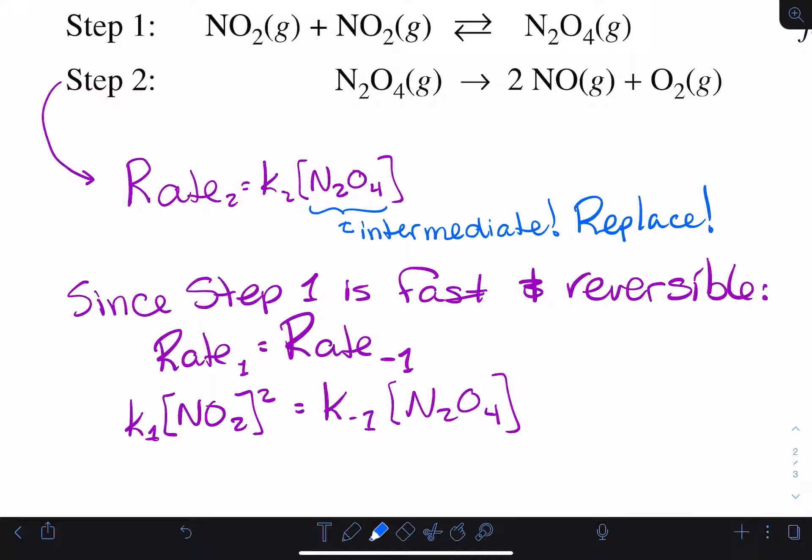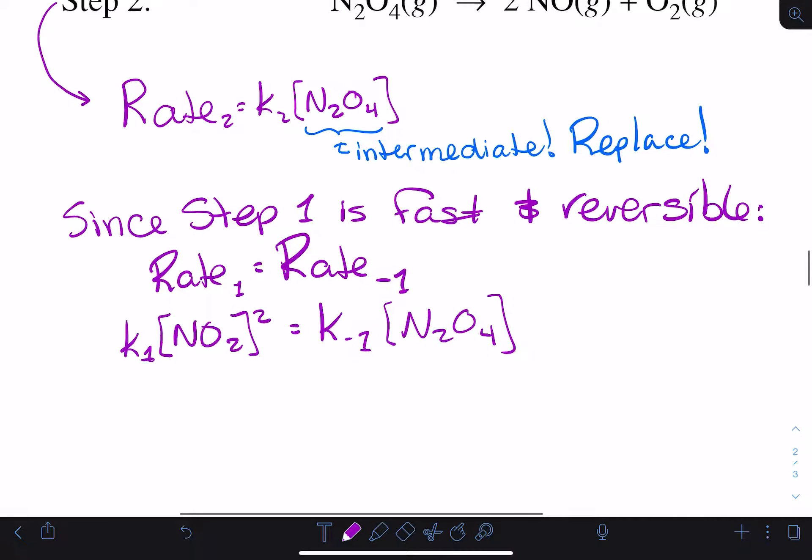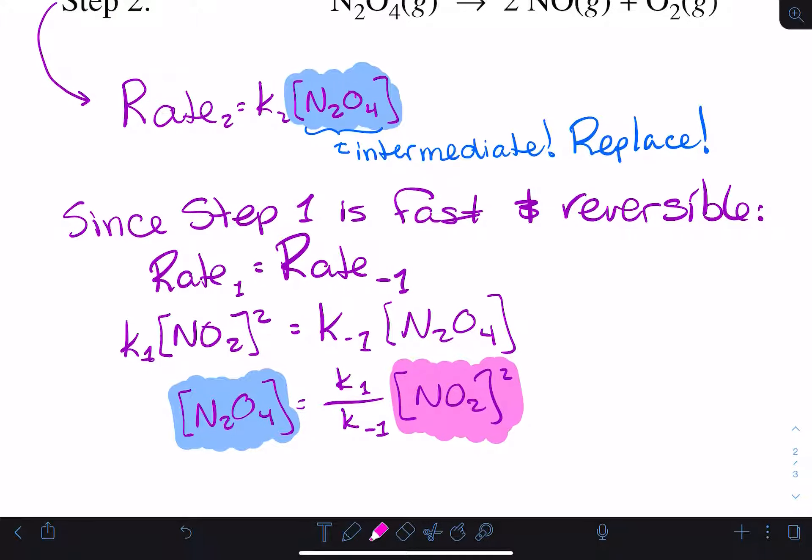When we rearrange, we now find that N2O4 is equivalent to some constants times the concentration of NO2 squared. The constants all just end up getting clumped together. So what this amounts to is that N2O4 in your rate law is going to get replaced by NO2 squared.